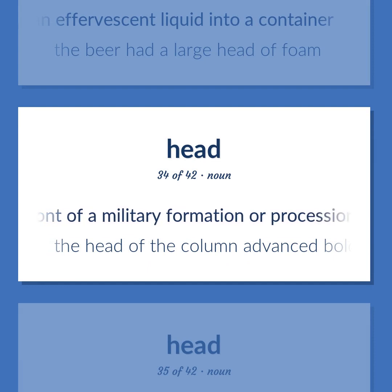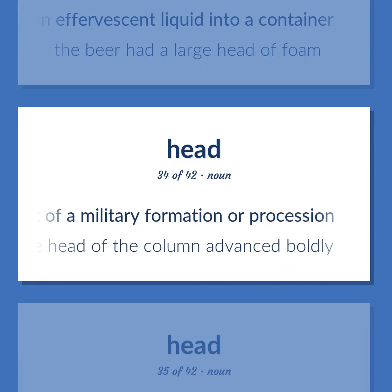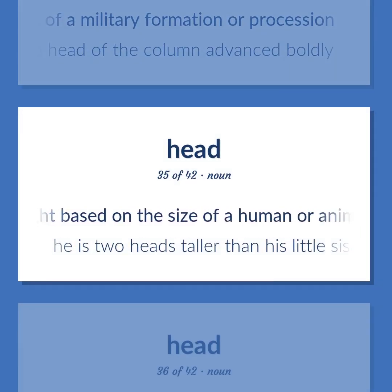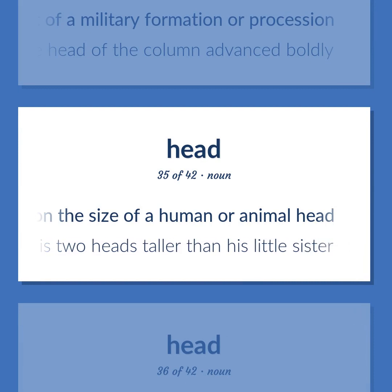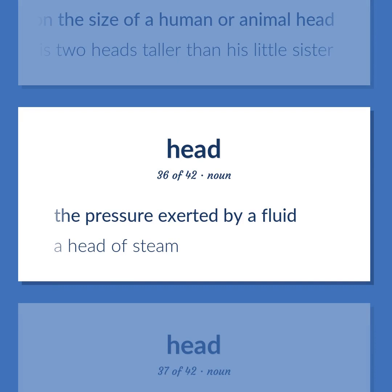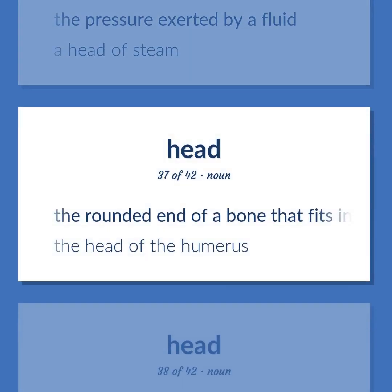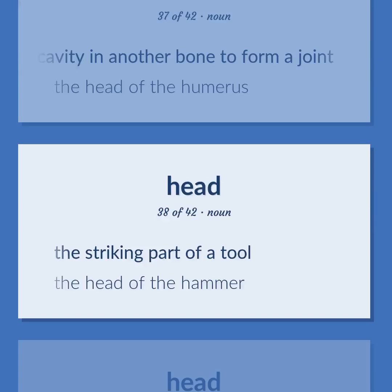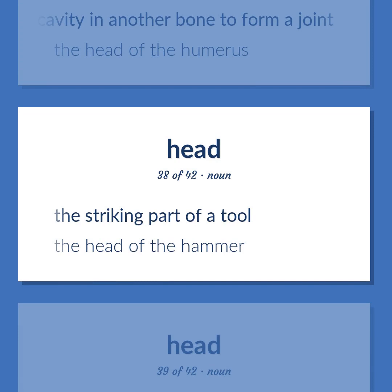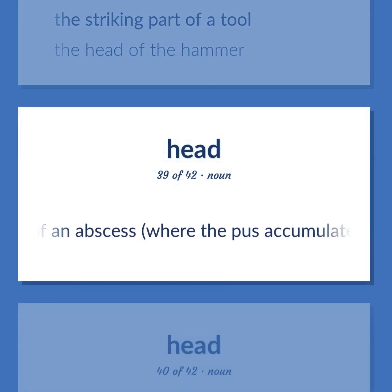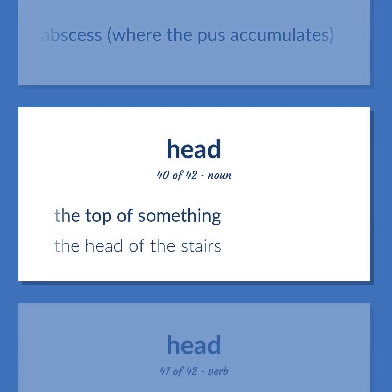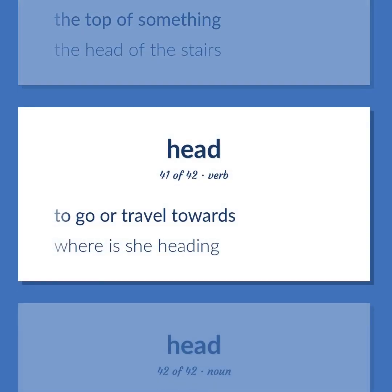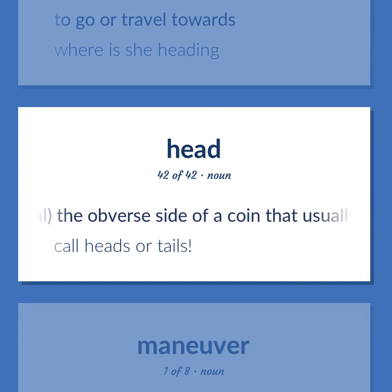The front of a military formation or procession. The head of the column advanced boldly. The length or height based on the size of a human or animal head. He is two heads taller than his little sister. The pressure exerted by a fluid. A head of steam. The rounded end of a bone that fits into a rounded cavity in another bone to form a joint. The head of the humerus. The striking part of a tool. The head of the hammer. The tip of an abscess, where the pus accumulates. The top of something. The head of the stairs. To go or travel towards. Where is she heading? Usually plural: the obverse side of a coin that usually bears the representation of a person's head. Call heads or tails.